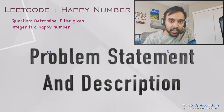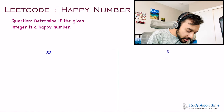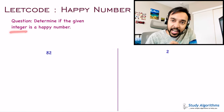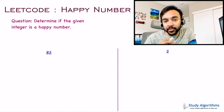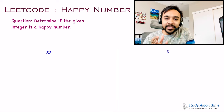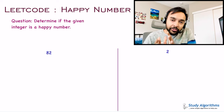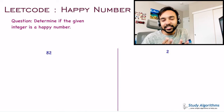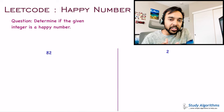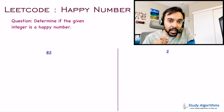Let us quickly make sure that we are understanding the problem statement correctly. You are given an integer and you have to determine if that integer is a happy number. If yes, return true; else you need to return false. The first question that should come to your mind is: what exactly is a happy number? In terms of mathematics and arithmetic, there is no such thing as a happy number.